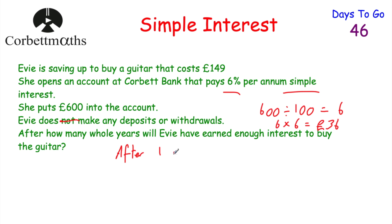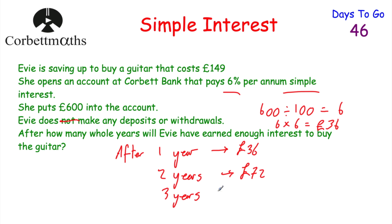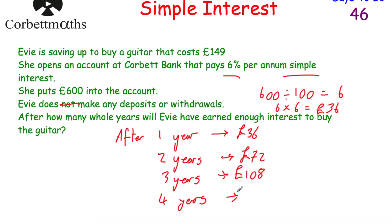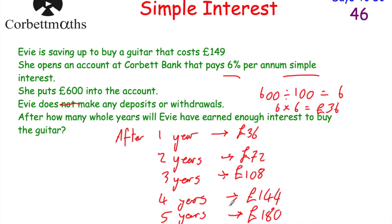After one year she'll have earned £36 — not enough for the guitar. After two years she'll have earned £72 — still not enough. After three years she'll have earned £108 — still not enough. After four years she'll have earned £144, which isn't quite enough for the guitar. So she's going to wait another year. After five years she'll have earned £180 of interest. So after how many whole years will Evie have earned enough interest to buy the guitar? The answer is five years — she'll have to wait five years to afford the guitar just using the interest.